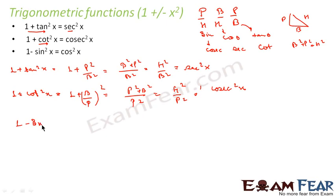Similarly, we will take 1 minus sin square x. So sin equals P by H, which is 1 minus P square by H square. So this becomes H square minus P square over H square. If you take here, this becomes B square. So this becomes B square by H square. And B by H we know is cos. So this becomes cos square x. So thus we have proved all these three formulas. It's pretty simple.